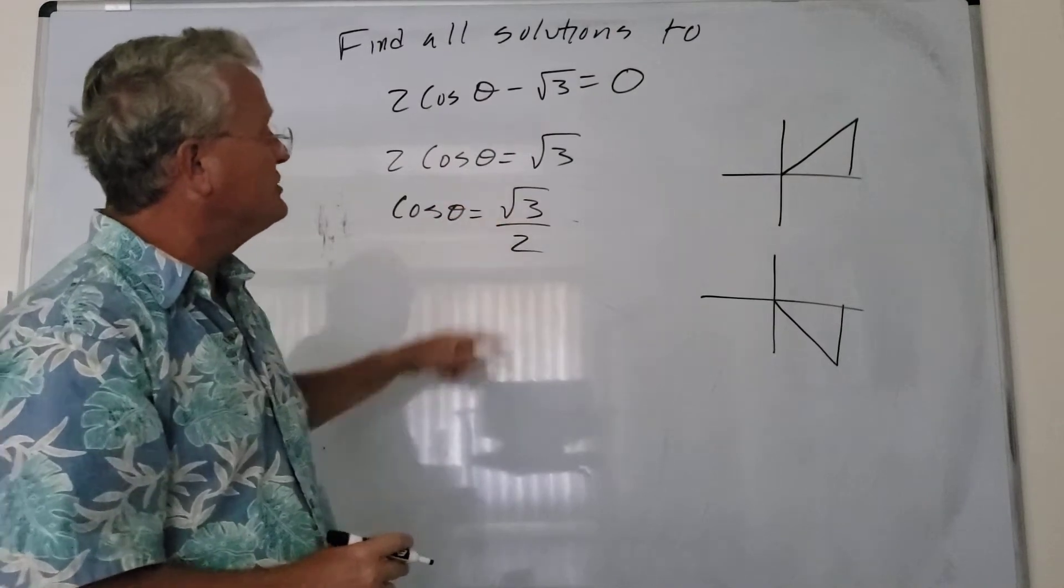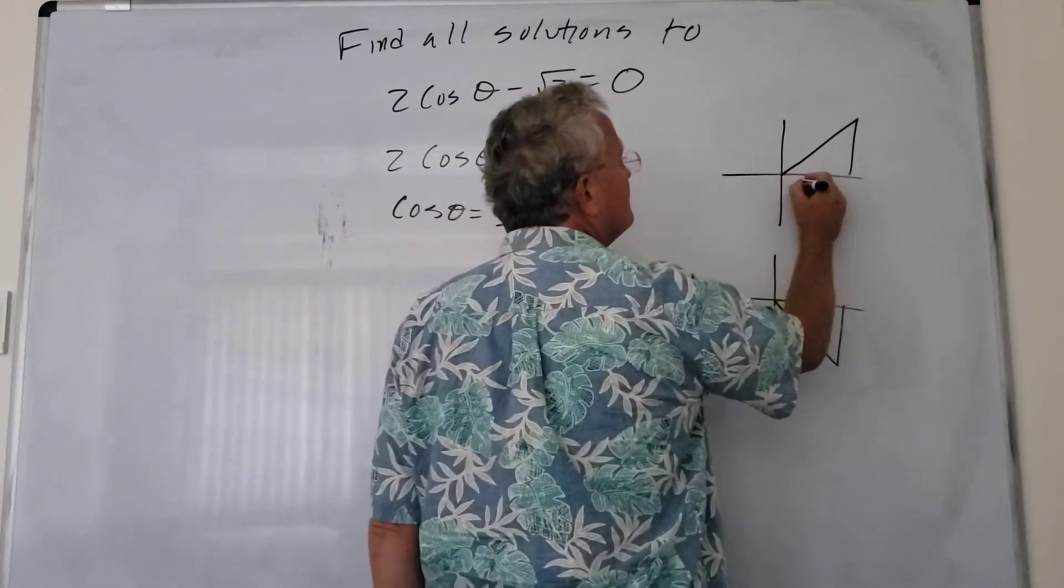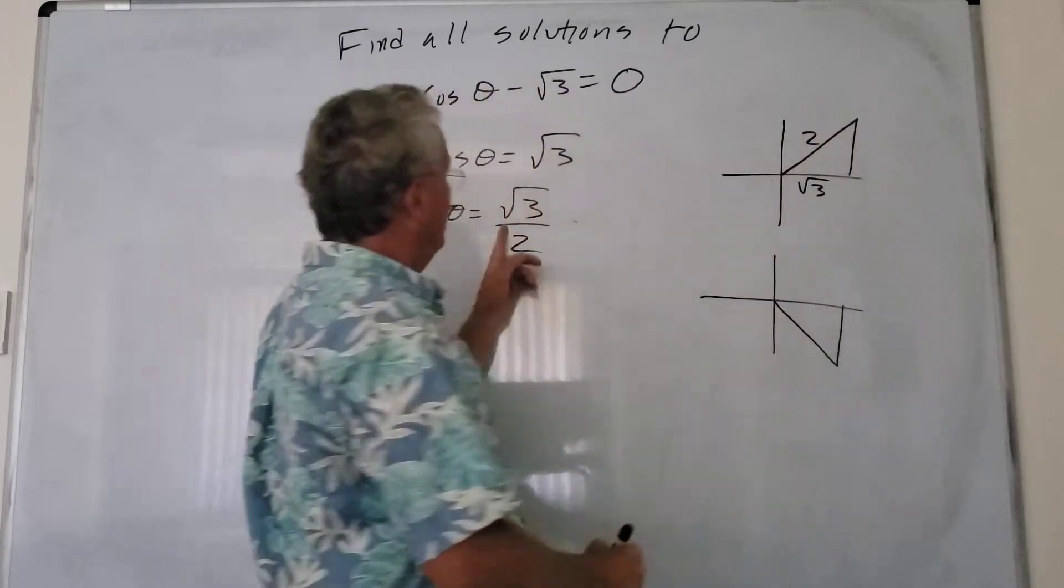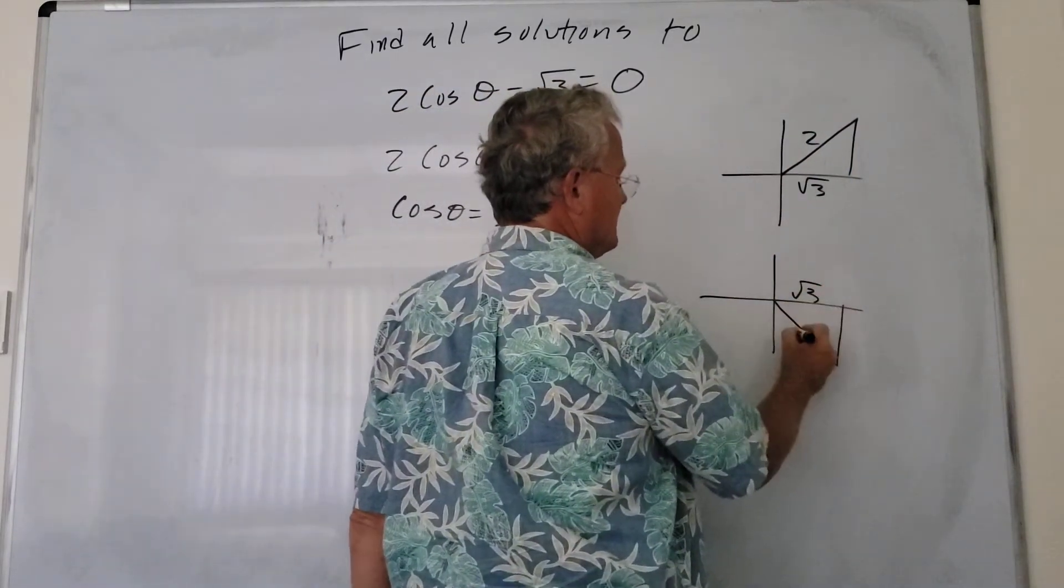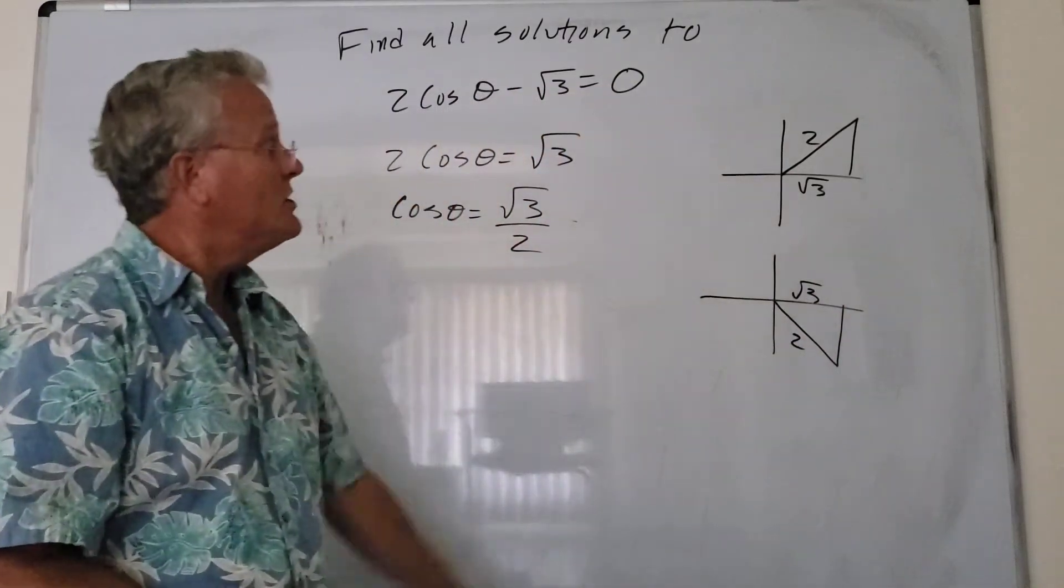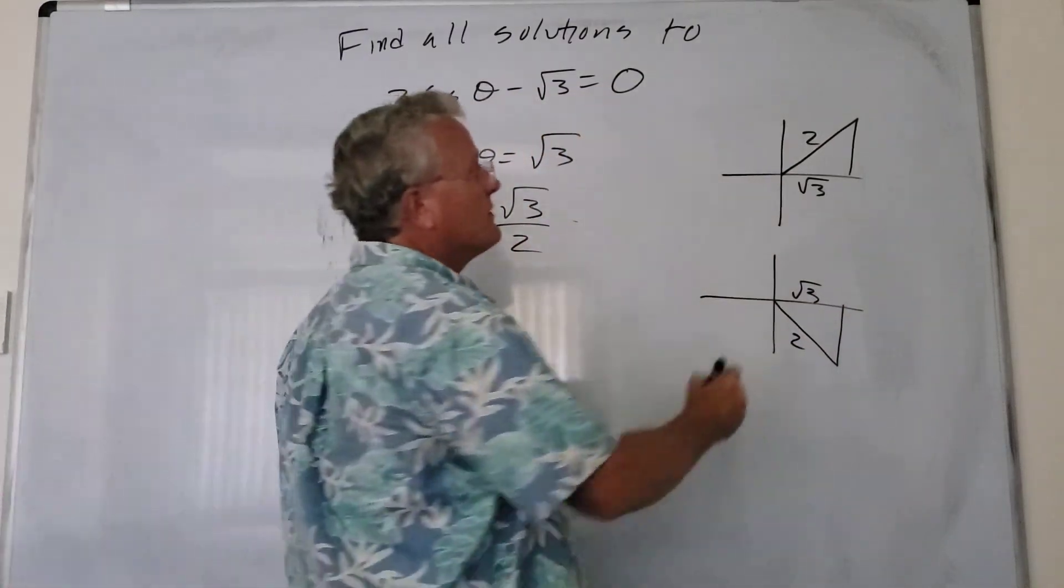So cosine is adjacent over hypotenuse, and relative to this angle this is the adjacent, this is the hypotenuse. So this is the 1, 2, square root of 3 triangle.